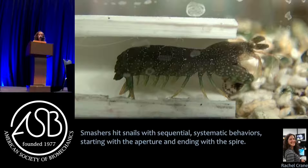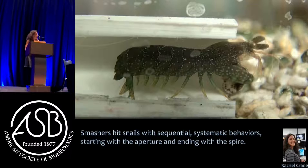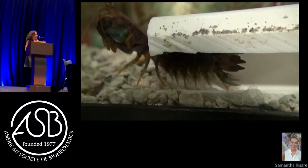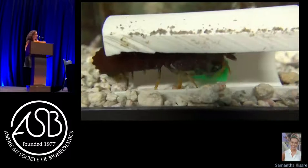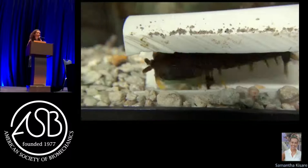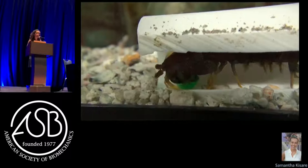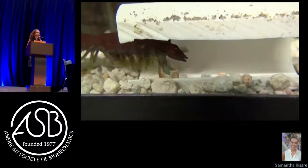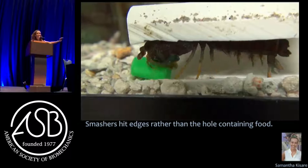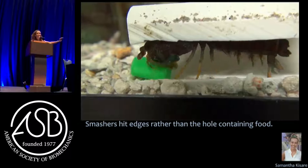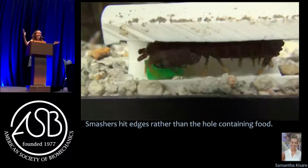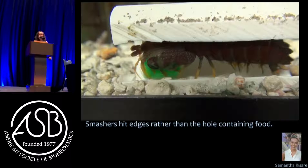That leaves us with one more question: what does the mantis shrimp sense? What is it cueing in on with these snail shapes? This led to one of my most fun projects: we give them shapes. A little cylinder with a hole on the side containing food - the animal can taste the food and knows exactly where it is, but it does not hit on the hole. It finds a different mechanical place to strike, very systematically working on the edges of the cylinder. What we're learning is that smashers go for edges rather than the food container. While engineers and physicists are trying to figure out how super-high-peak impact breaks mollusks, we're asking the animals to tell us what they know.